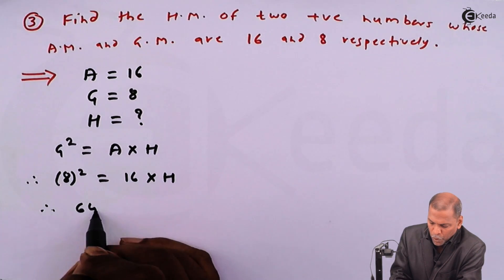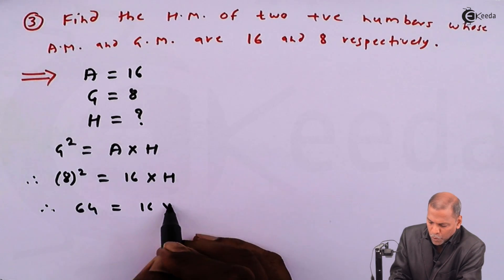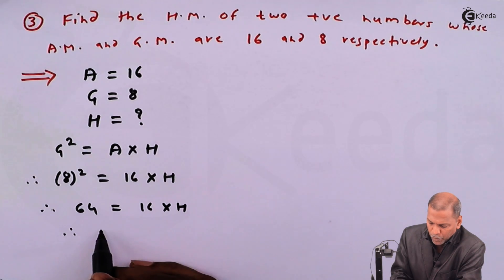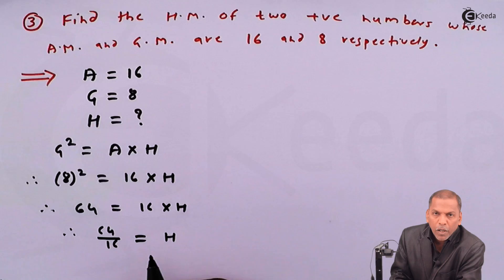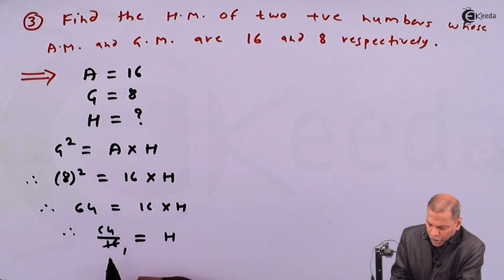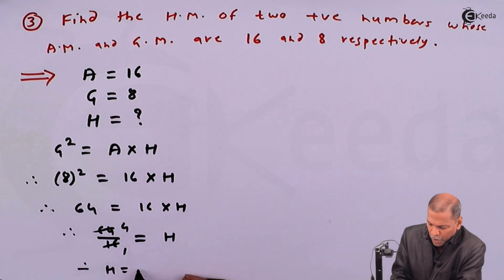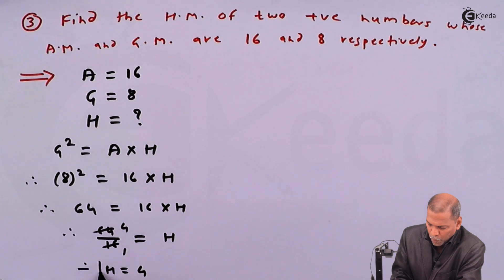Therefore, 64 is equal to 16 into H. Therefore, 64 divided by 16 is equal to H. Now 16 ones are 16, and 16 fours are 64. So finally, we have H is equal to 4.